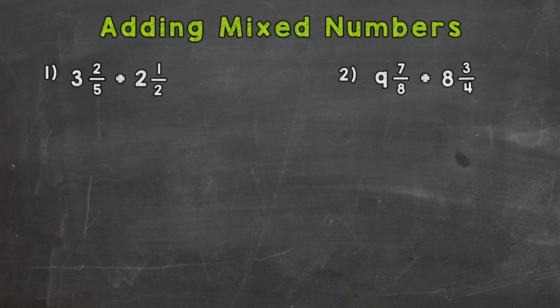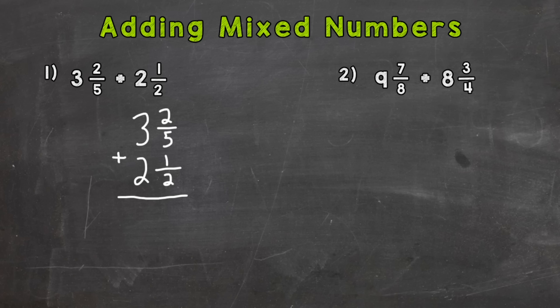The first thing I like to do is set this problem up vertically — up and down. So I have three and two-fifths plus two and one-half, with my fractions lined up and my whole numbers lined up.